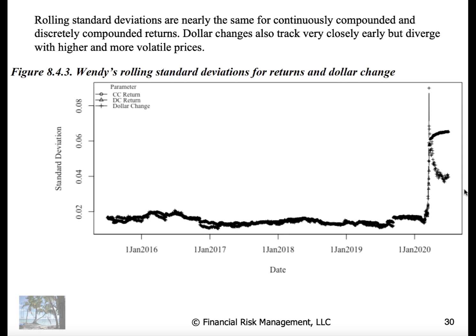Nobody could have predicted this huge spike in the standard deviations with the onset of the pandemic. The dollar change actually deviates significantly from continuously compounded and discrete compounded returns. The rolling standard deviation, although they track close together during periods of significant shock, we find that the differences are quite material. In the next part we'll pick up here with examining other statistics.